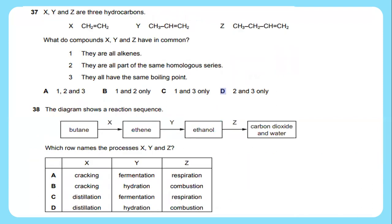Question 37: X, Y, and Z are three hydrocarbons. What do compounds X, Y, and Z have in common? You can see that they are all alkenes and they are all part of the same homologous series. The answer will be 1 and 2.